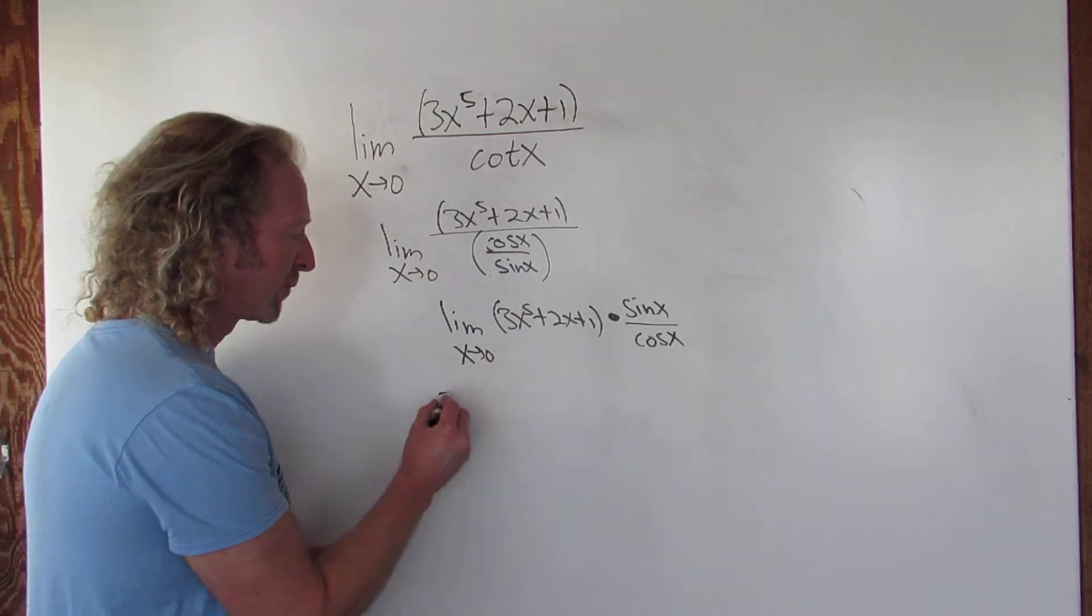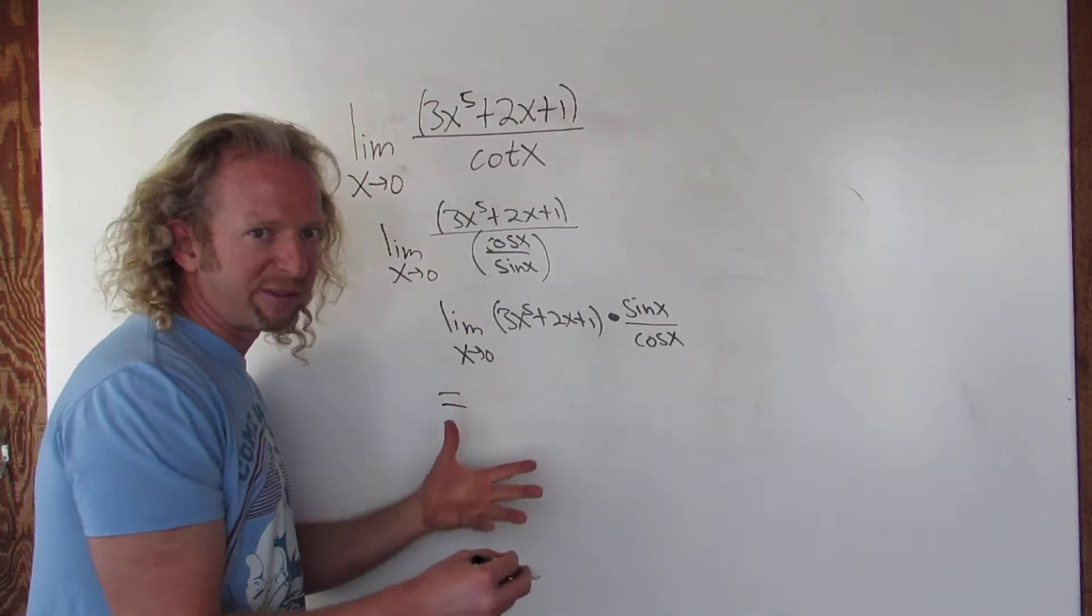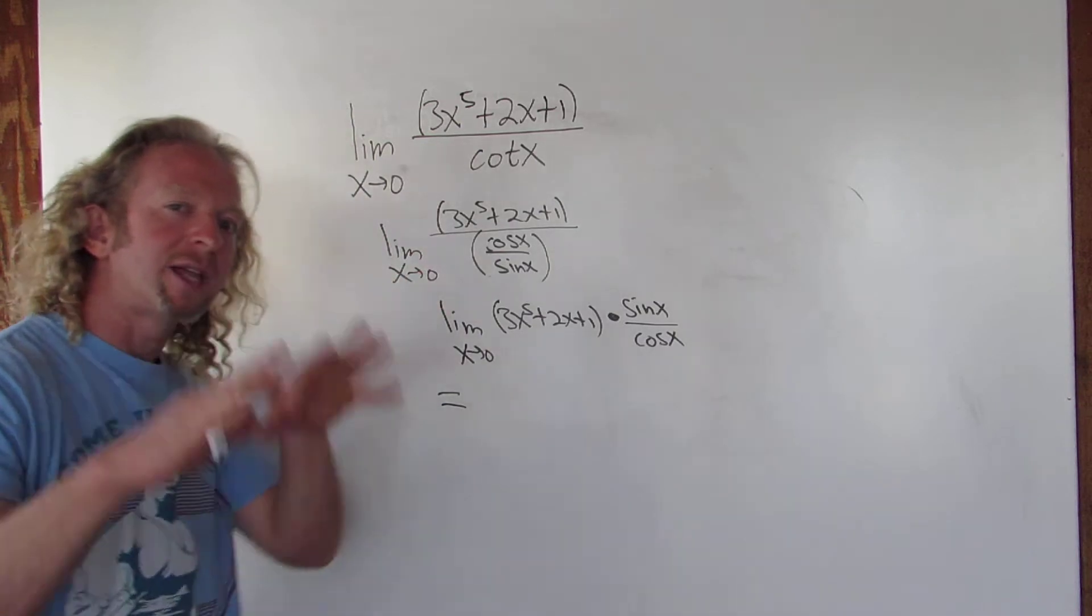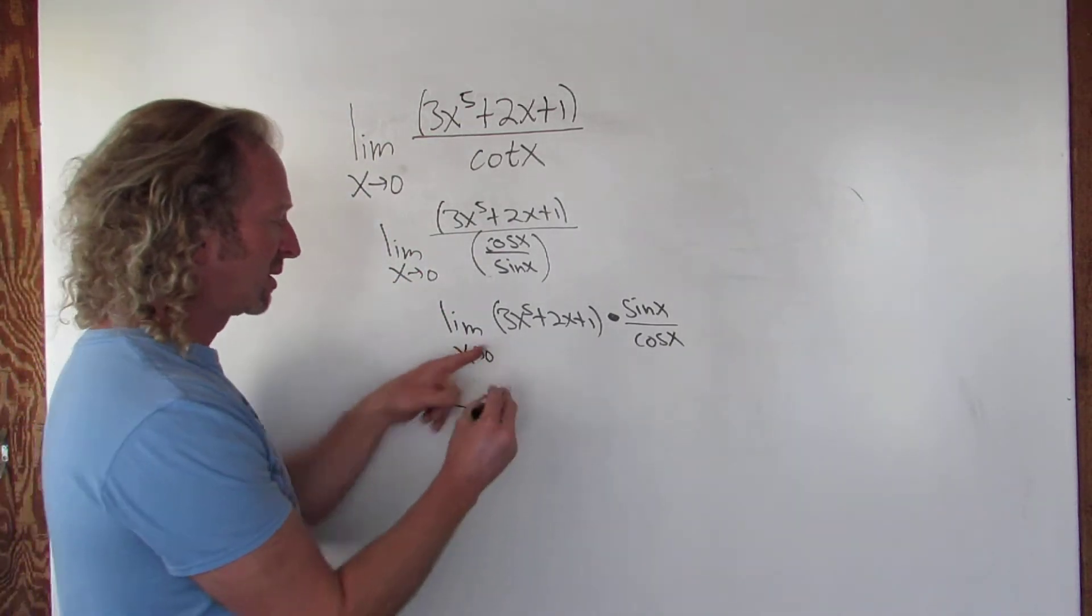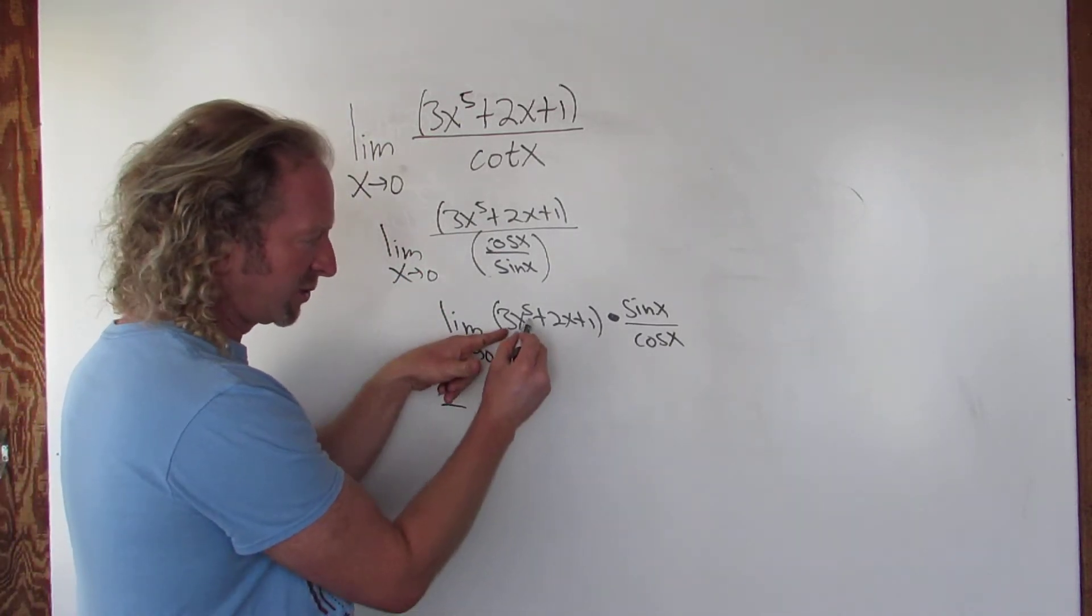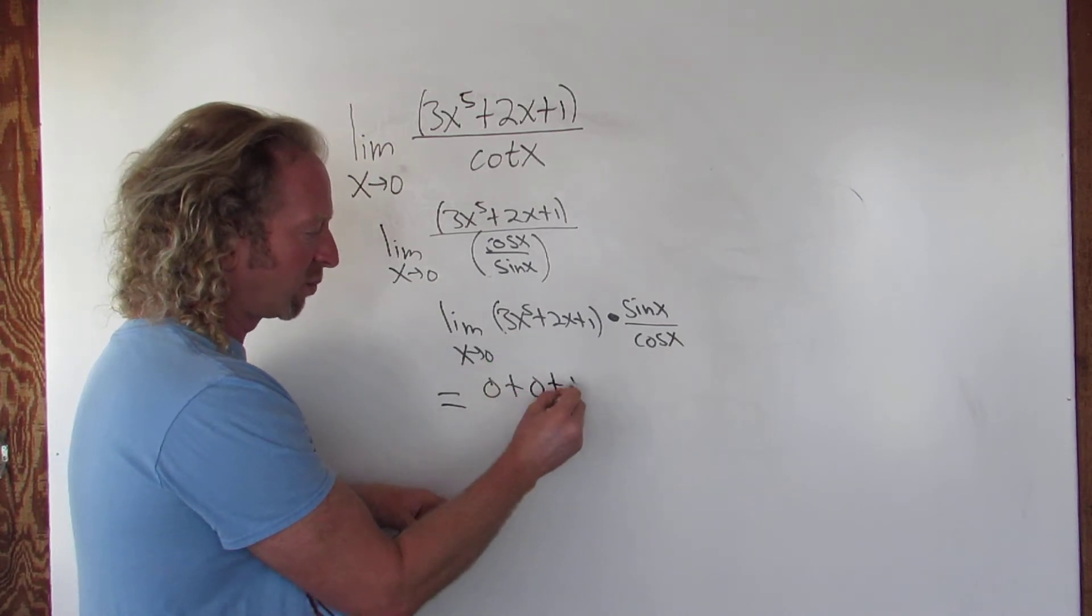So now you just replace all of your x's with 0's. This is the part where you drop the limit sign. Whenever you evaluate the limit, that's when you drop your limit sign. So this is going to be 3 times 0 to the fifth, so just 0, plus 0, plus 1.